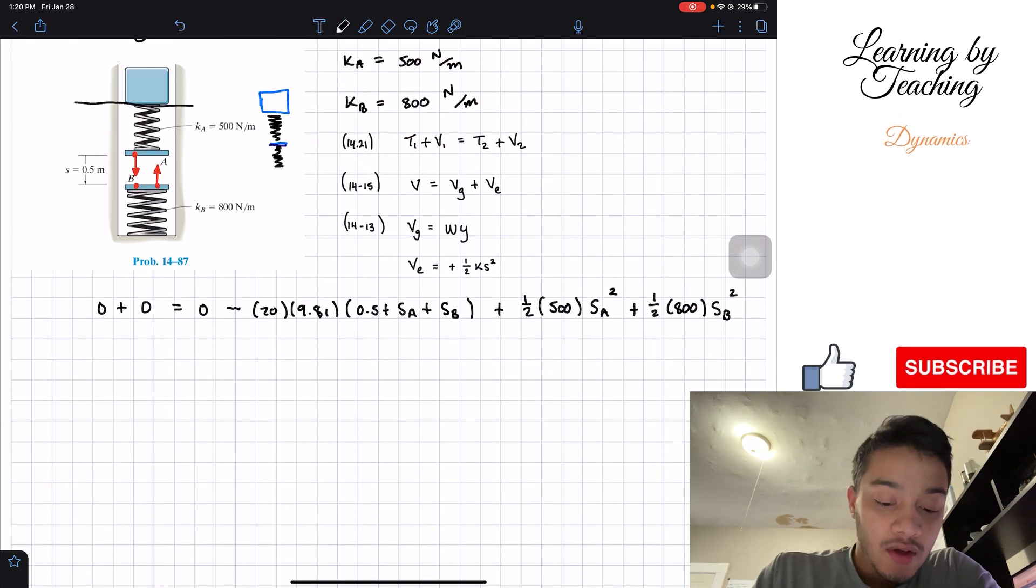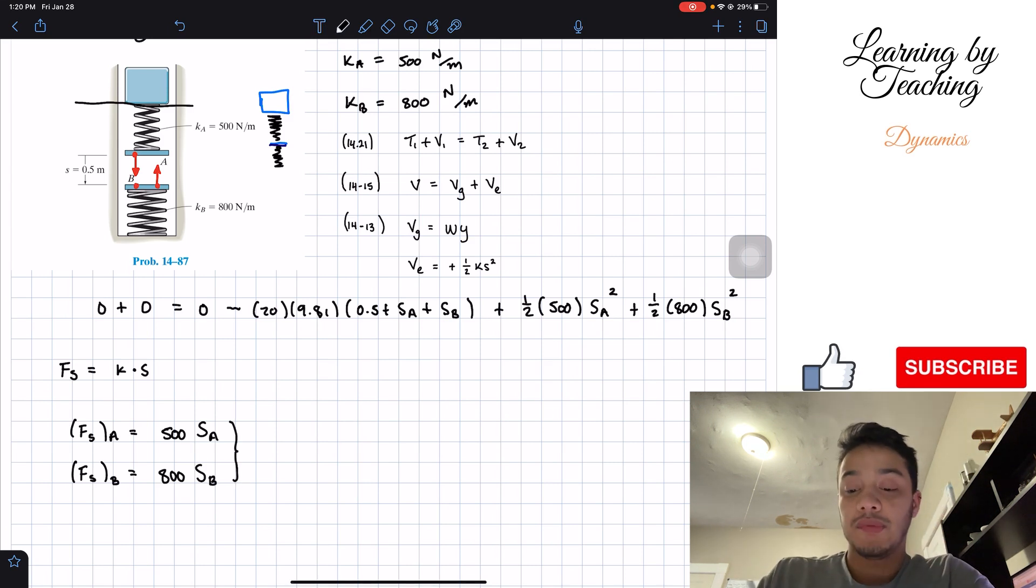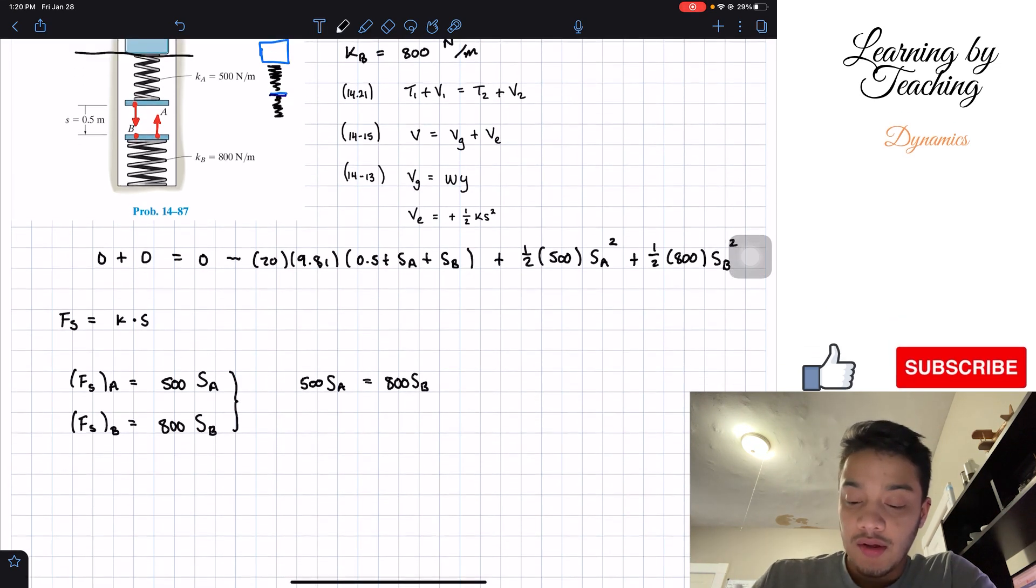The force of a spring can be determined by multiplying the coefficient k times the amount that it got compressed. The force of spring A will equal k equals 500 times SA, and similarly for B we have the force of spring B equals 800 times SB. These two are going to be equal to each other, so we will have 500 SA equals 800 SB. If we solve for SA, we will have SA equals 8 over 5 SB, or 1.6 SB. This will be my second equation.